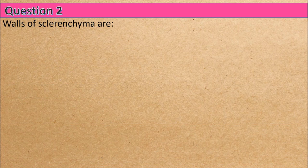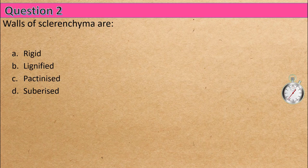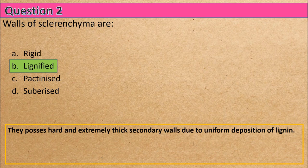Question 2: Walls of sclerenchyma are — Option A: rigid, Option B: lignified, Option C: pectinized, Option D: suberized. The correct answer is Option B: lignified.